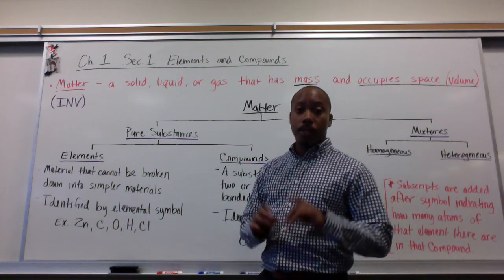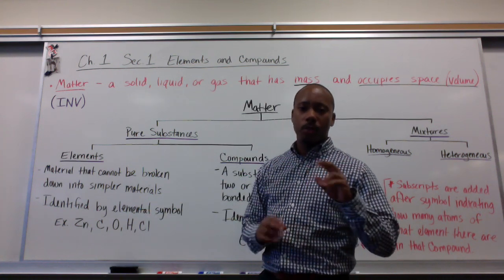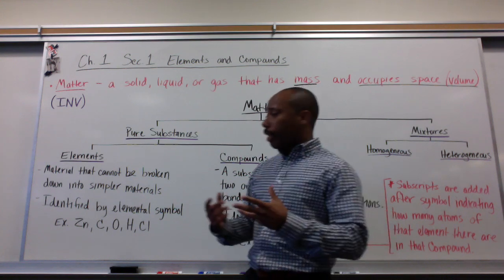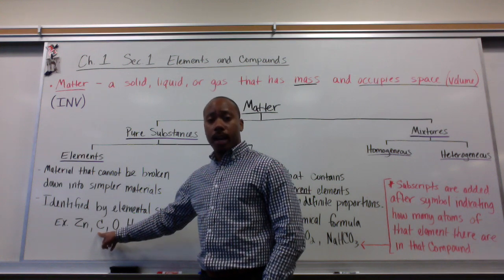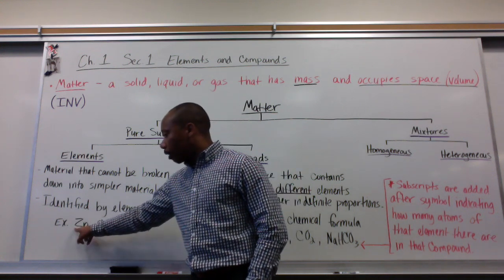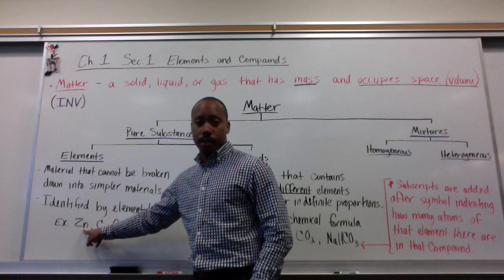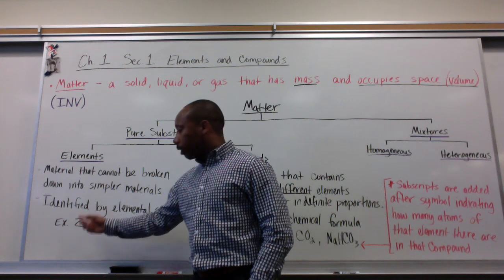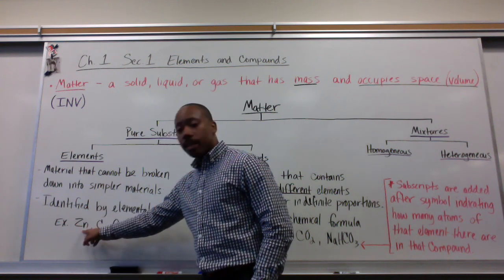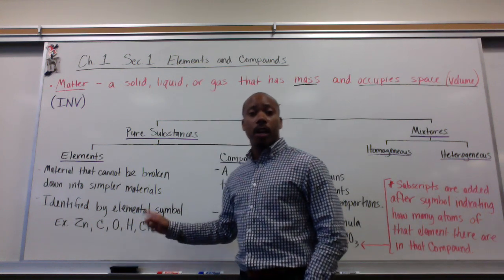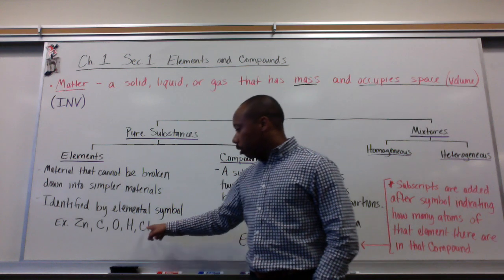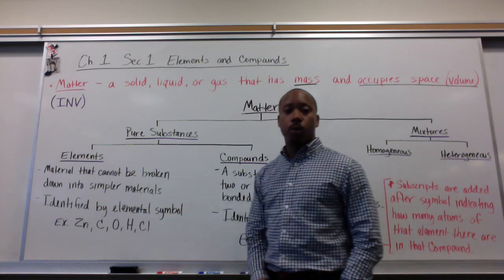Elemental symbols come in two ways, or three ways, but usually just two major ways. They come in single capitalized letters, like the C here, or they come in the form of a capitalized letter followed by a lowercase letter. For example, Zn stands for zinc, C stands for carbon, O stands for oxygen, H stands for hydrogen, Cl, the lowercase l here, stands for chlorine.